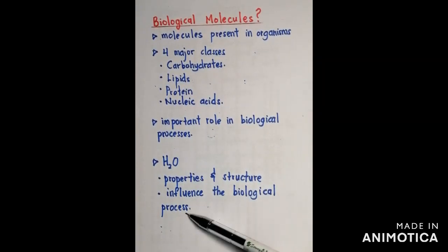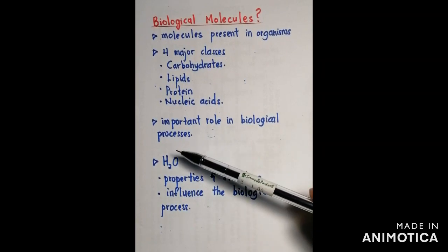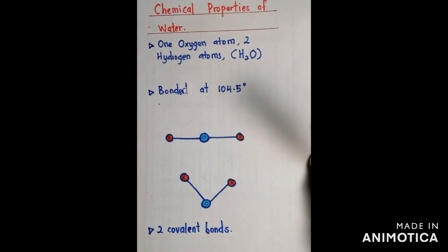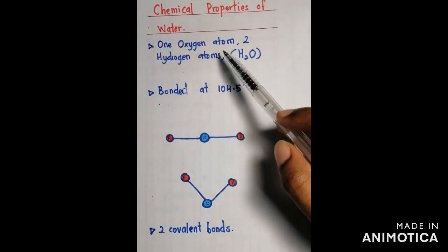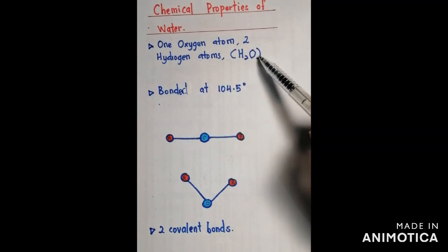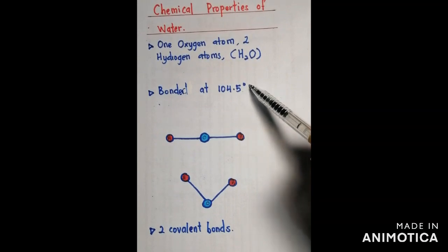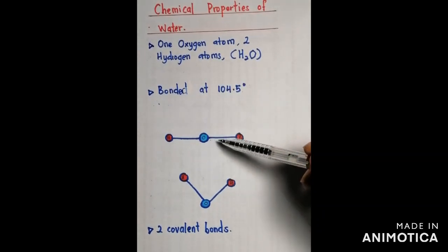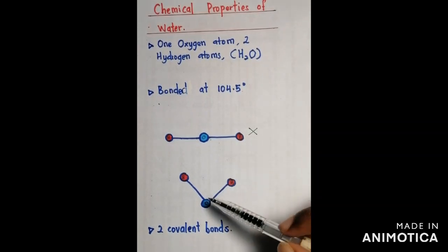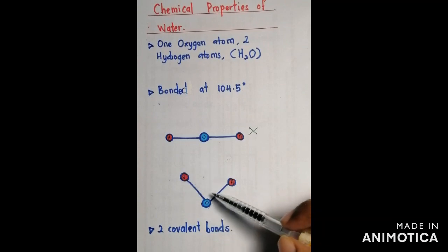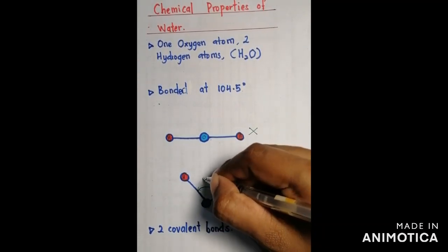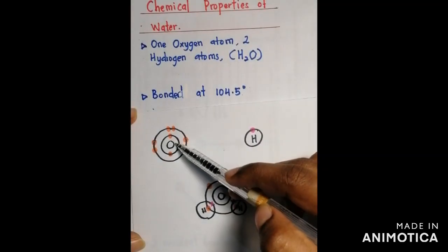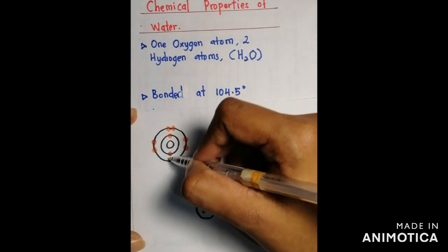Water influences most biological processes. Now we'll see about the chemical properties of water. Water has one oxygen atom and two hydrogen atoms — H₂O. They are bonded at 104.5 degrees. You can't draw a water molecule as a straight line; it should be drawn with the oxygen atom bonded to the hydrogen atoms at a 104.5 degree angle. Why? The oxygen atom has six valence electrons.